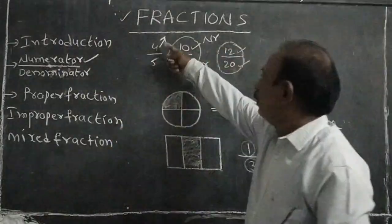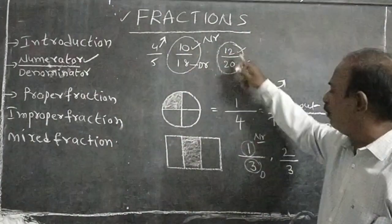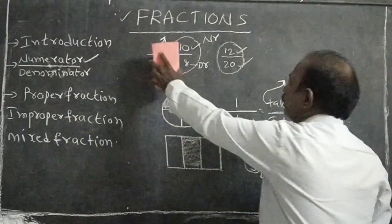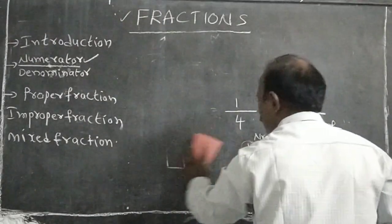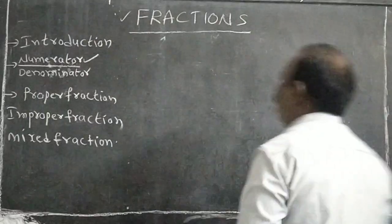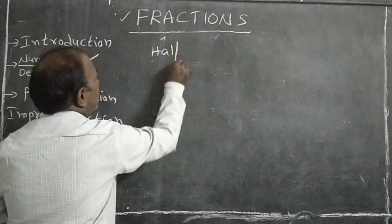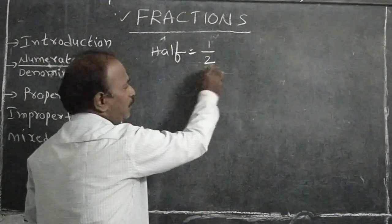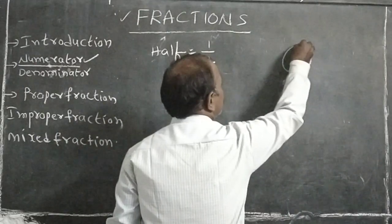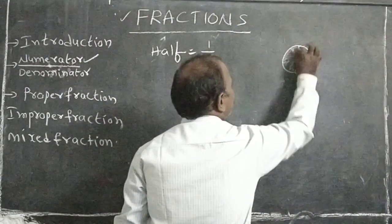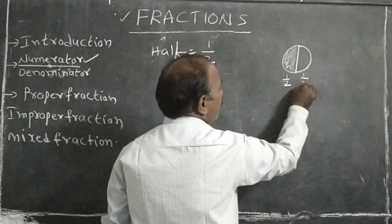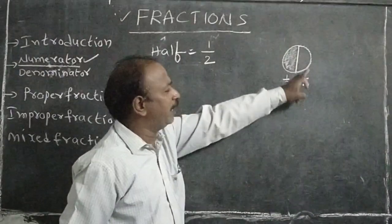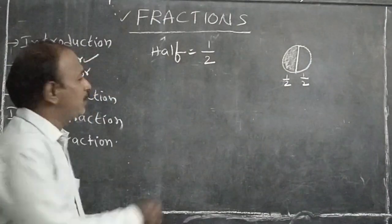A fraction is denoted as P by Q, for example 4 by 5, 10 by 18, 12 by 20. Among standard fractions, half is denoted by 1 by 2. In two equal parts, one part is shaded — that represents 1 by 2. The other unshaded part also represents 1 by 2. So half is denoted by 1 by 2.